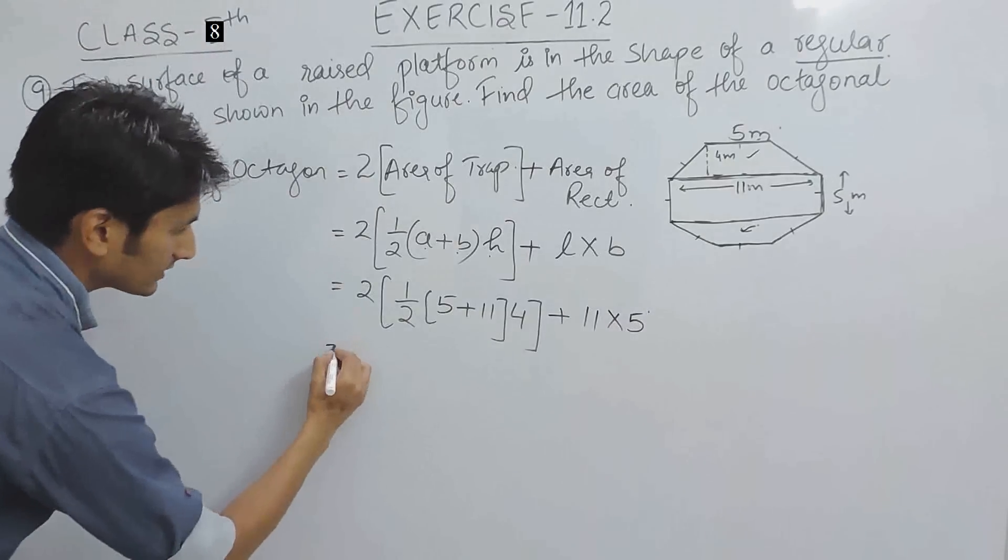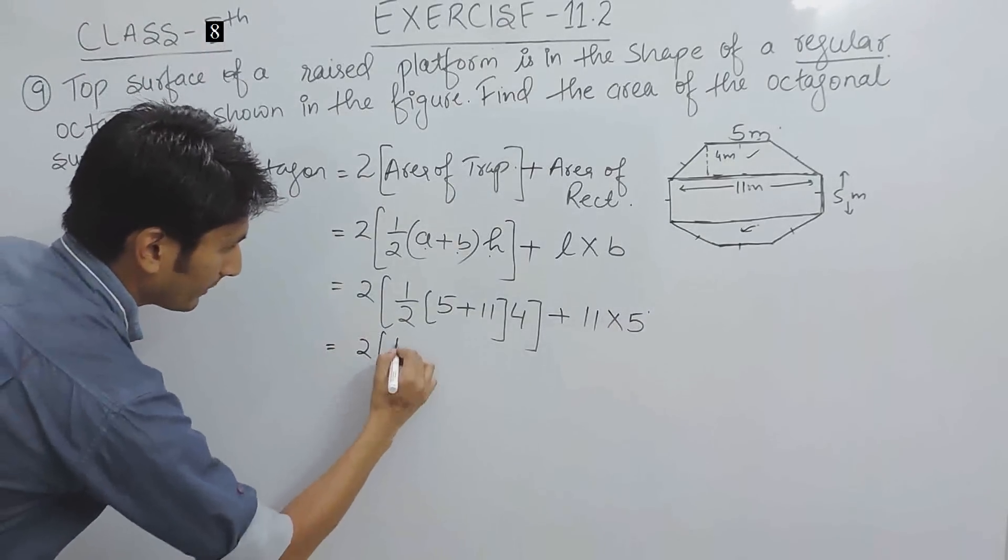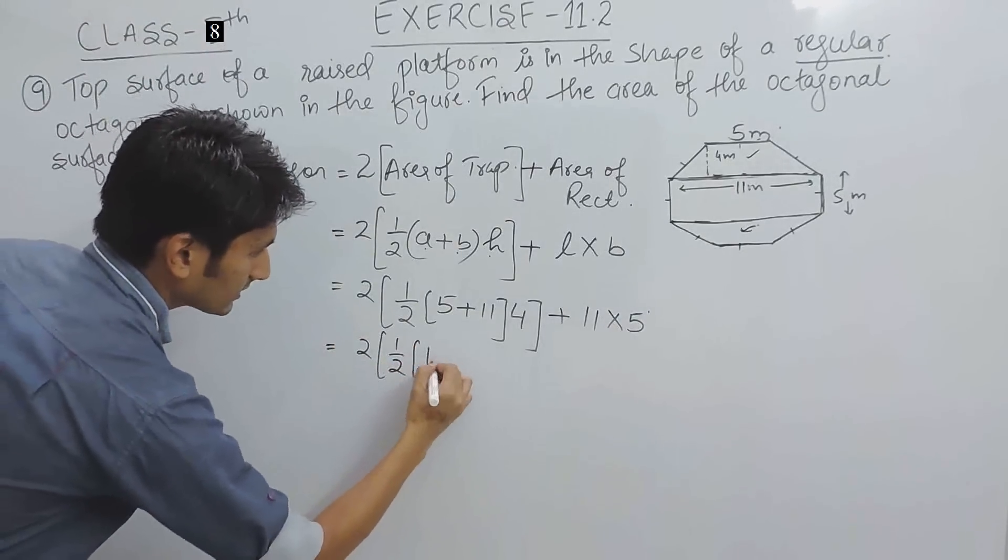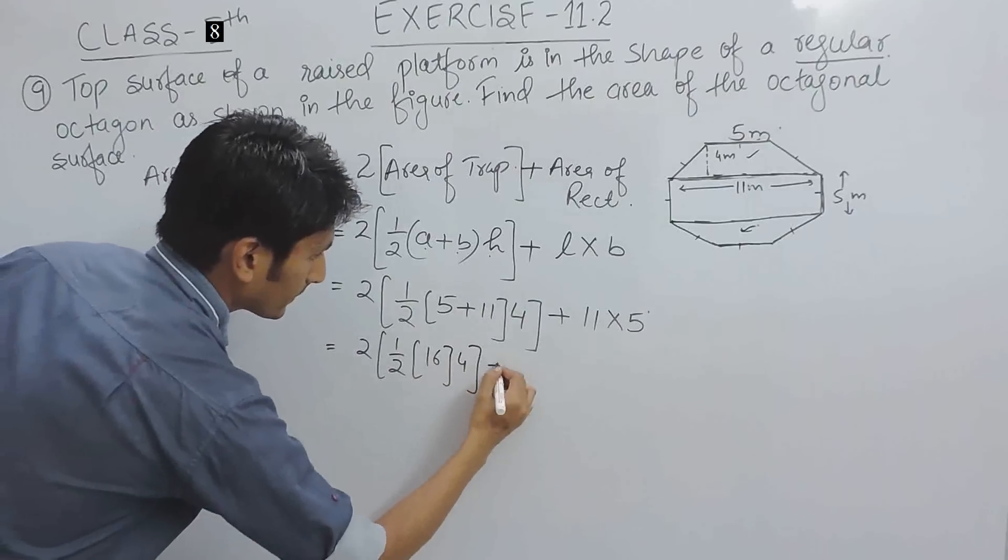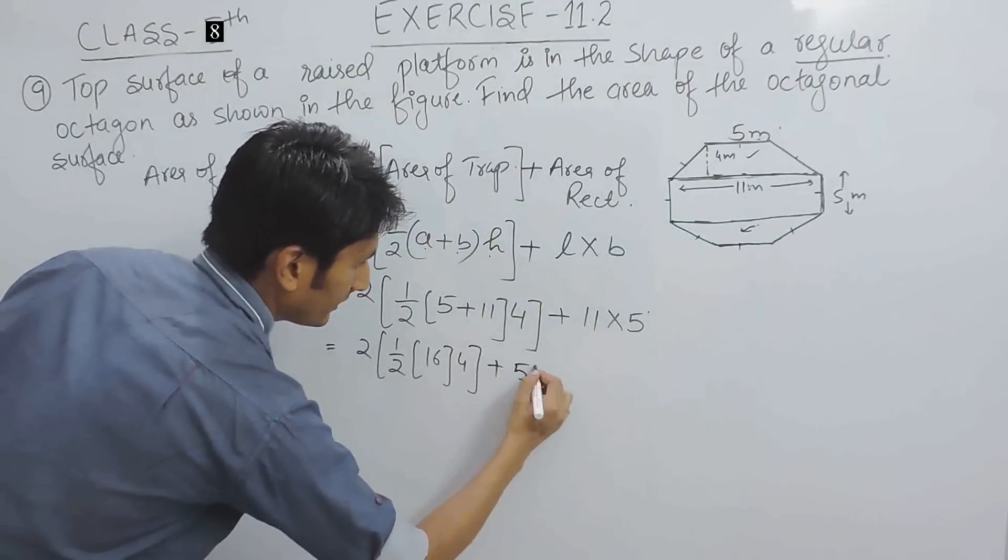Now, we can simply solve this. This is 2 multiplied by half, this is 16 multiplied by 4 plus this is 55.